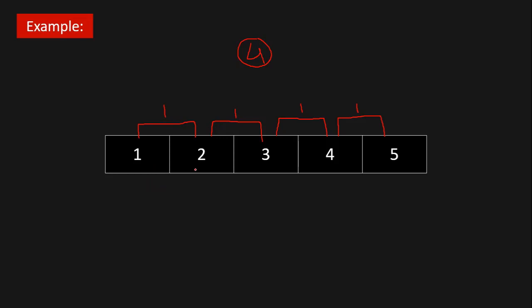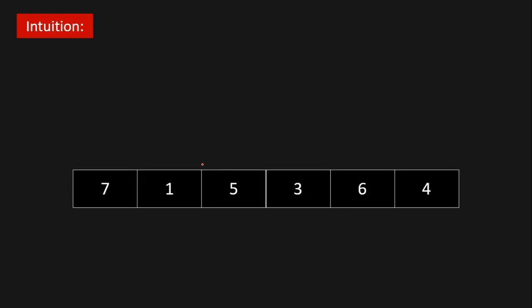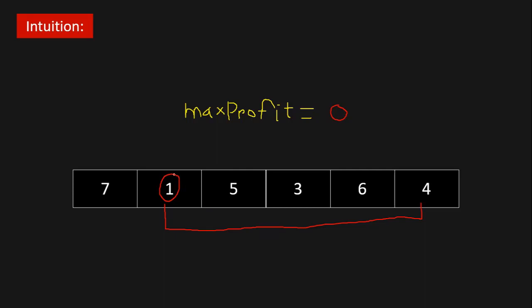This is a pretty straightforward problem. Let's see how we can solve it. Suppose we are given this array. First we initialize max profit equals to 0. Then we iterate through the array from the second element to the end. Our current element is 1, and we check the current element against the previous element. If the current element is greater than the previous element, we buy at the previous and sell at the current.